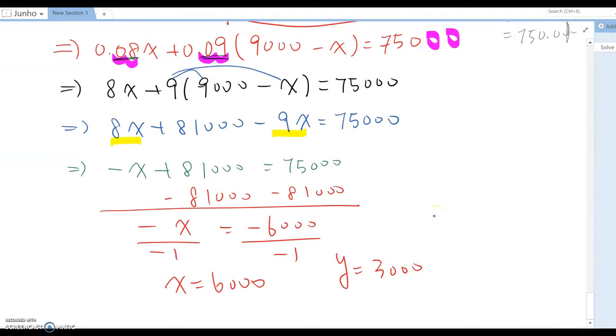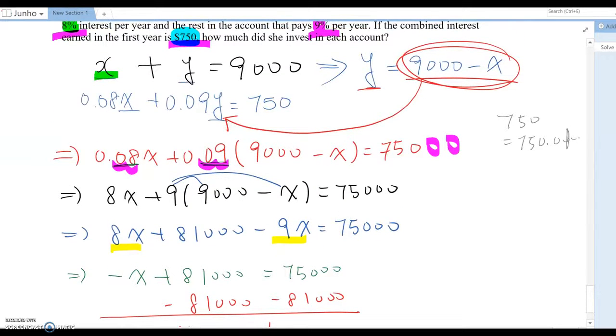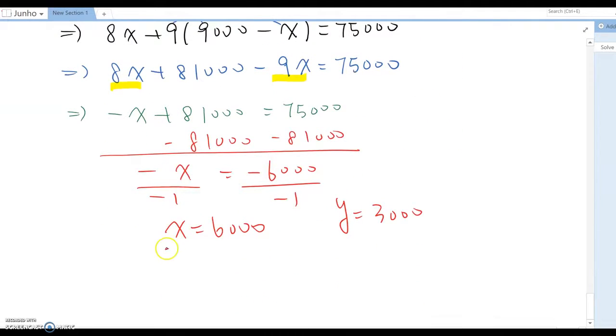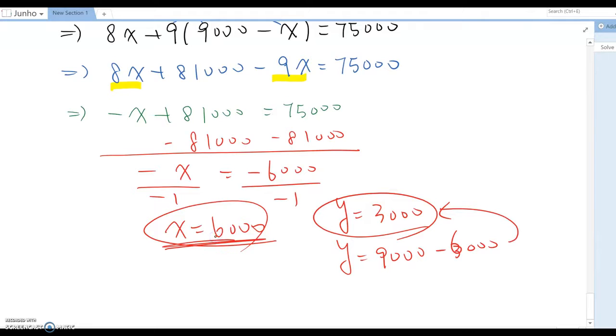Why? Because X plus Y must be 9,000. So X equals 6,000, then Y becomes 9,000 minus 6,000 and become 3,000. So we found she invested 6,000 for 8% account, 3,000 for 9% account.